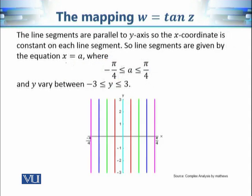These are the line segments you can see on the screen. They are colored in different ways so that we can track their images in the w-plane. So x varies from −π/4 to π/4, and y varies from −3 to 3.